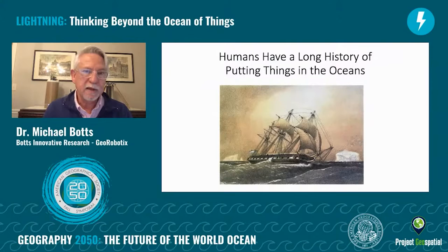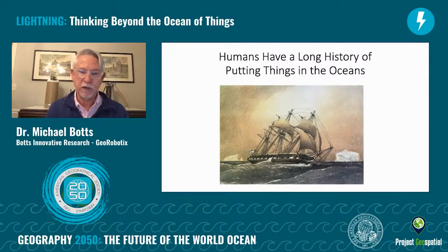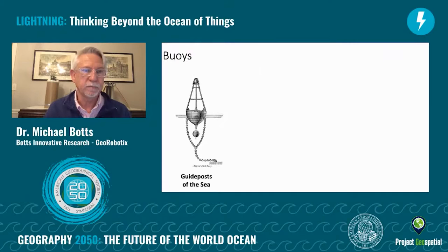Since man began navigating the seas, he's been concerned about ocean measurements, mostly about location, direction, ocean depth, weather, and weather forecasts. But other observations such as temperature, ocean geology, biological samples, water chemistry, and such have also been important.